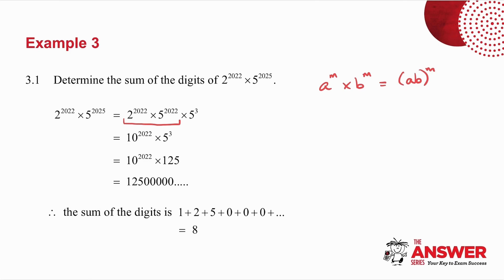10^2022 is 1 with 2022 zeros after it. 5 cubed is 125. If I take 125 multiplied by 10 to the power of anything, I get 125 and then a whole lot of zeros.